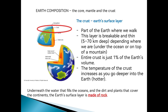Let's revisit this slide — it was shown in the first video. This is the composition of the earth. The earth is composed of the core, mantle, and the crust. The innermost center is what we call the core, and these are mostly made of molten metal or solid metal — it is very, very hot in the center. After the core, we find the mantle, and then we have the crust. The crust is the earth's surface layer — the part of the earth where we walk, the ground we step on.